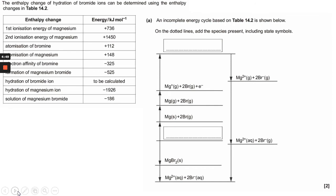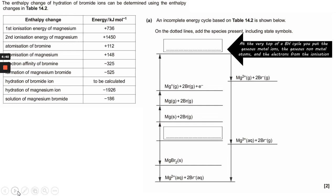So let's start with the beginning part of the question where it asks us to add the species present including state symbols. Using our knowledge of Born-Haber cycles, at the top of every Born-Haber cycle you should have the gaseous metal ions because they're created here. Let's take my laser pointer.